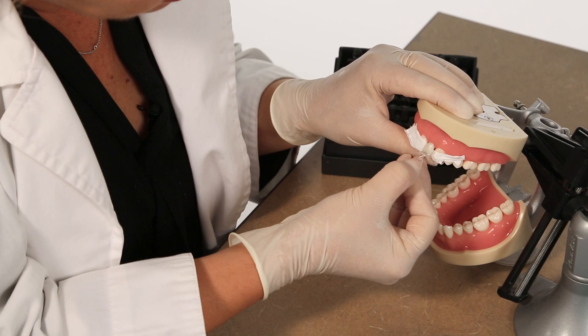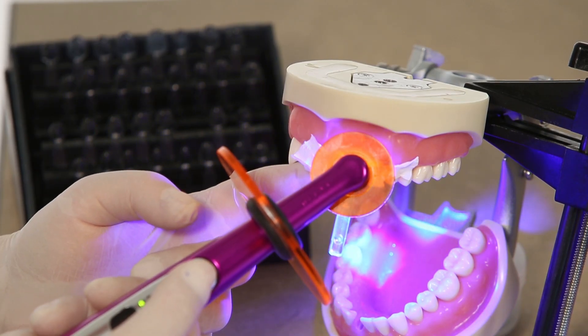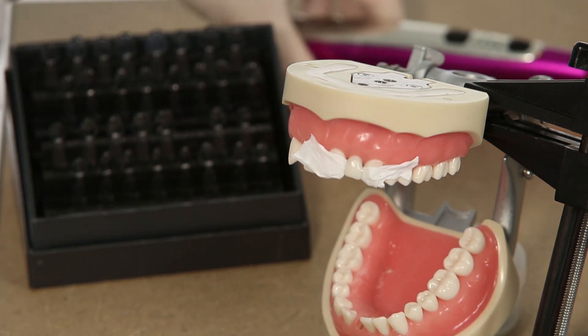Then, making sure the center line on the template is parallel with the center line on the face, light cure for 40 seconds. The template should easily be removed from the cured composite.